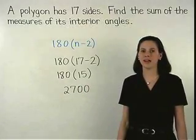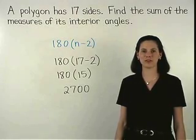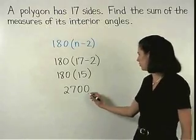So if a polygon has 17 sides, then the sum of the measures of its interior angles is 2700 degrees.